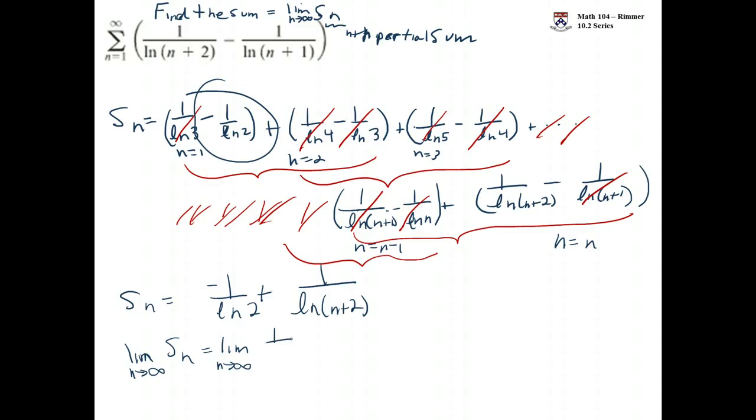As n gets big, the term 1 over natural log 2, negative 1 over natural log 2, doesn't change, but the term 1 over the natural log of n plus 2 goes to zero. N gets big, n plus 2 is big, the natural log of big is large, 1 over something very large is very small. And so this is equal to negative 1 over the natural log of 2, and that's your sum.